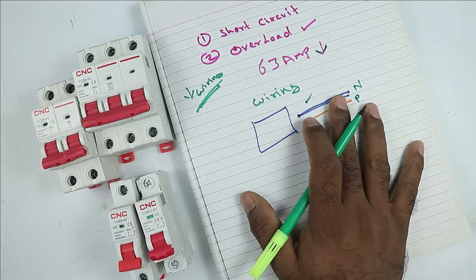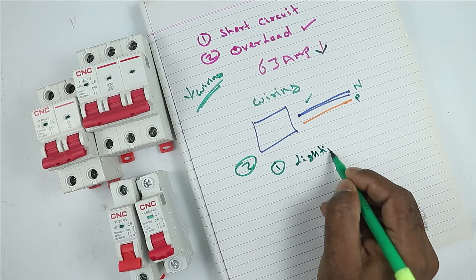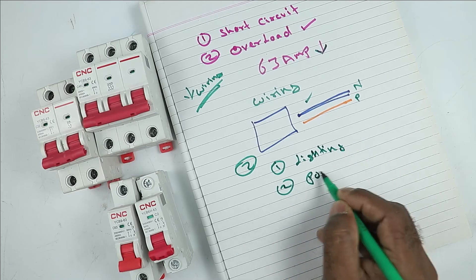Friends, the devices in our home, i.e. electrical device, are of two types. First one is lighting. Second one is power consuming load.